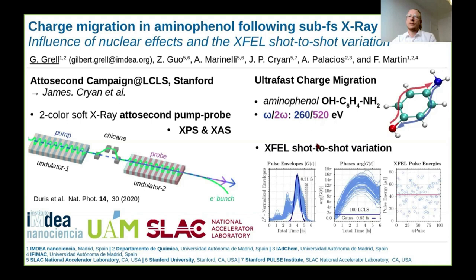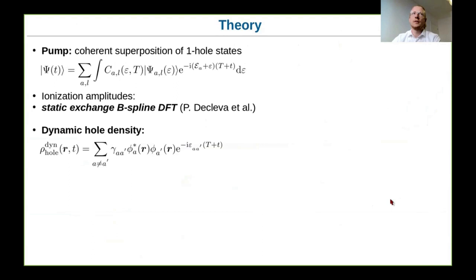The aim of this campaign was to study charge migration in aminophenol using pump pulses of roughly 260 eV and probe pulses around 500 eV. A peculiarity of X-rays is that each pulse has a slightly different temporal envelope, different phases, and slightly different pulse energies. This jitter or shot-to-shot variation might have a great impact on the observed observables, and we have been investigating this influence using a fully theoretical approach.